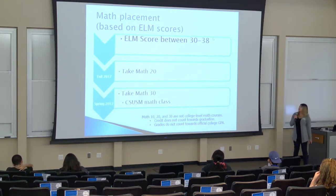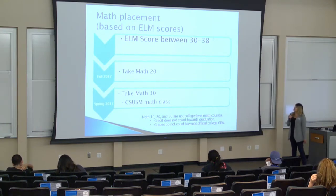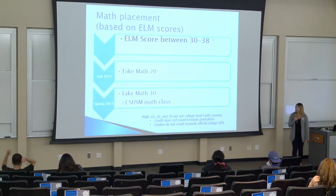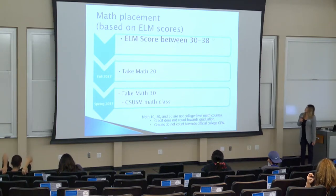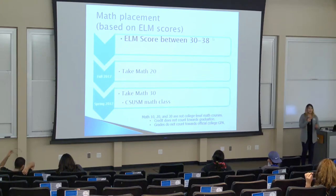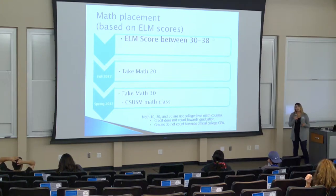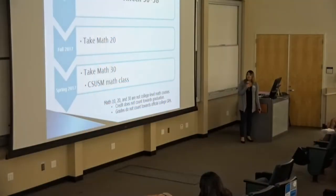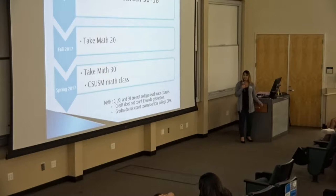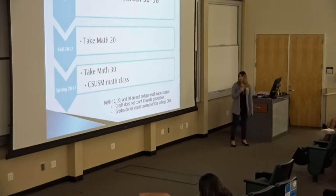For those who score between 30 and 38, you will be taking Math 20 in the fall and Math 30 in the spring. Keep in mind that you can retake the ELM, so if you score a little below, I would definitely recommend taking it again — because once you get a 50, you're done with your math requirement.